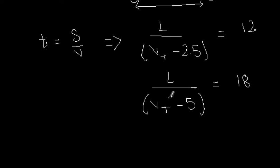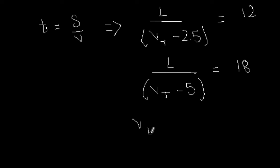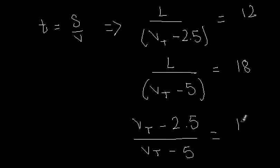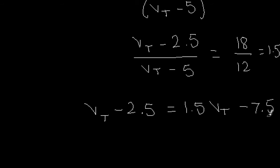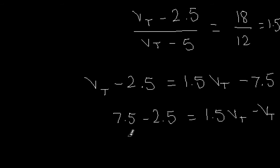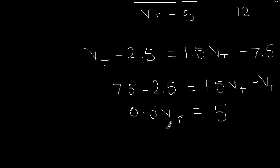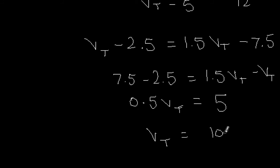Dividing the second equation by the first: 18/12 = (Vt - 2.5) / (Vt - 5), which gives 1.5 = (Vt - 2.5) / (Vt - 5). Cross-multiplying: Vt - 2.5 = 1.5(Vt - 5) = 1.5Vt - 7.5. Rearranging: 7.5 - 2.5 = 1.5Vt - Vt, so 0.5Vt = 5, giving Vt = 10 meters per second.